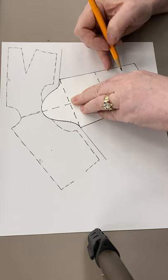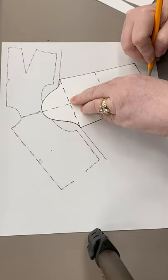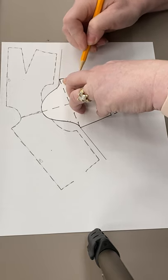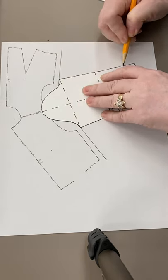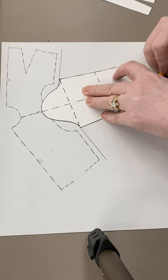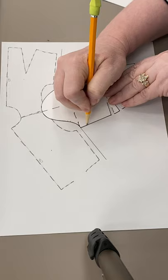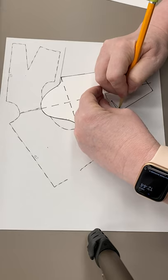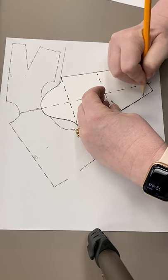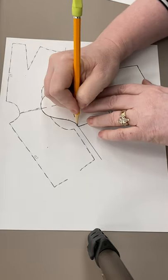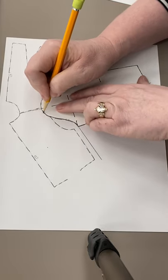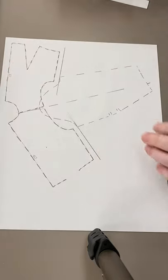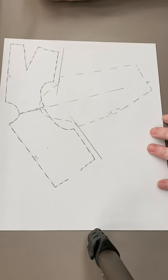None of the lines on the sleeve will be real lines yet except for this longitudinal line - you need to know where that is. Even these are going to change. Then we're going to take the sleeve off. Okay, so now you're left with something that's like this.